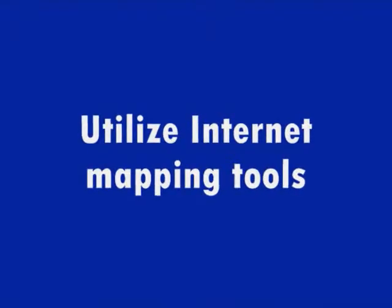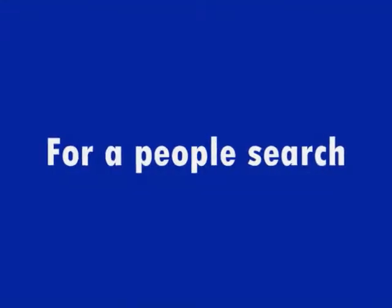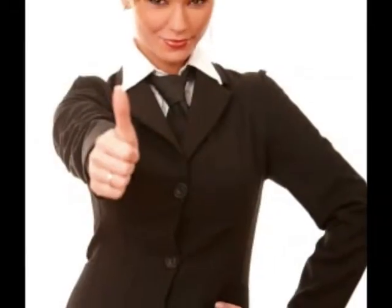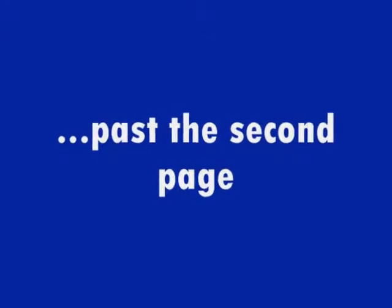Utilize internet mapping tools. Search engines like Google and Yahoo incorporate mapping tools so you can locate businesses or residences using satellite images. To find people using these tools, you can add special search criteria — for a people search, you can enter the person's name in a specific state. Avoid going through several pages of search results, as they rarely turn up useful information past the second page.